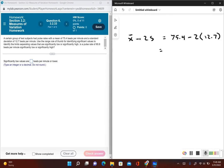Let's simplify this. I have 75.4, and now I have to multiply first. I have to multiply the 2 and the 12.7 before I can subtract. So 2 times 12.7, that gives us 25.4.